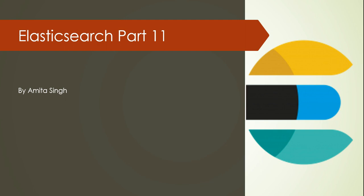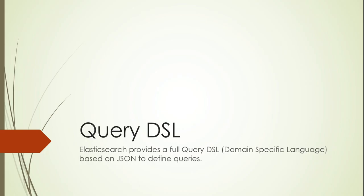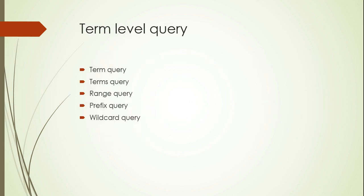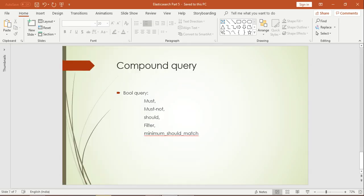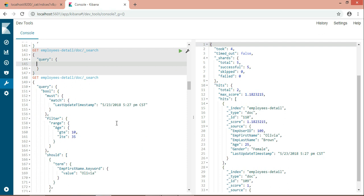Today's session is a continuation of my previous session on Query DSL. In today's session I'll be talking about the compound query. I've already covered the term level query. In the compound query I'll be covering the boolean query — must, must not, should, filter, and minimum should match.